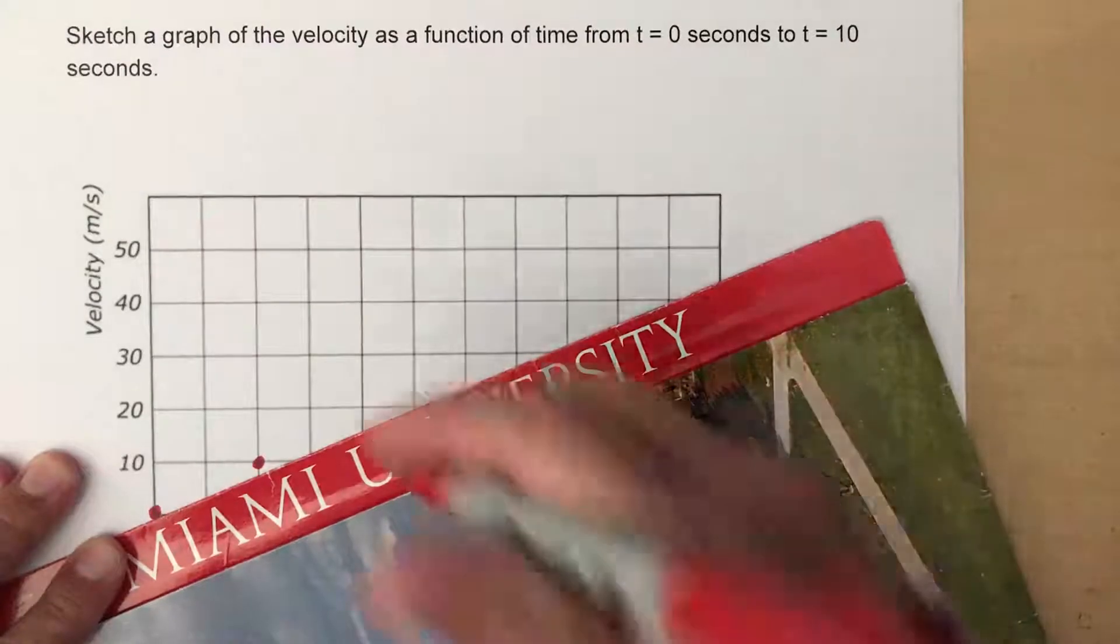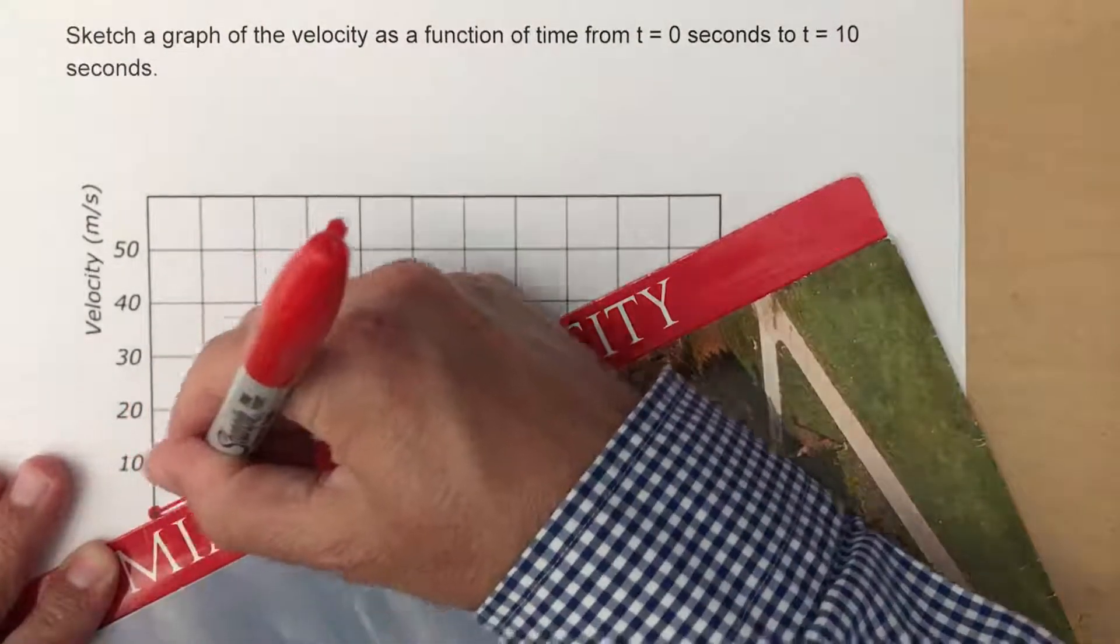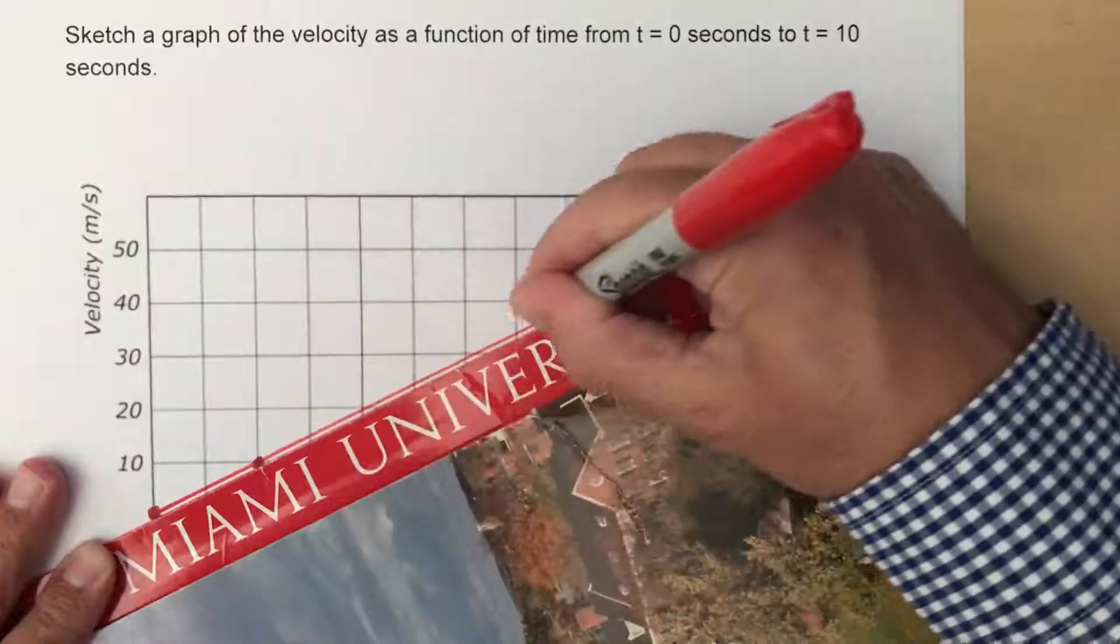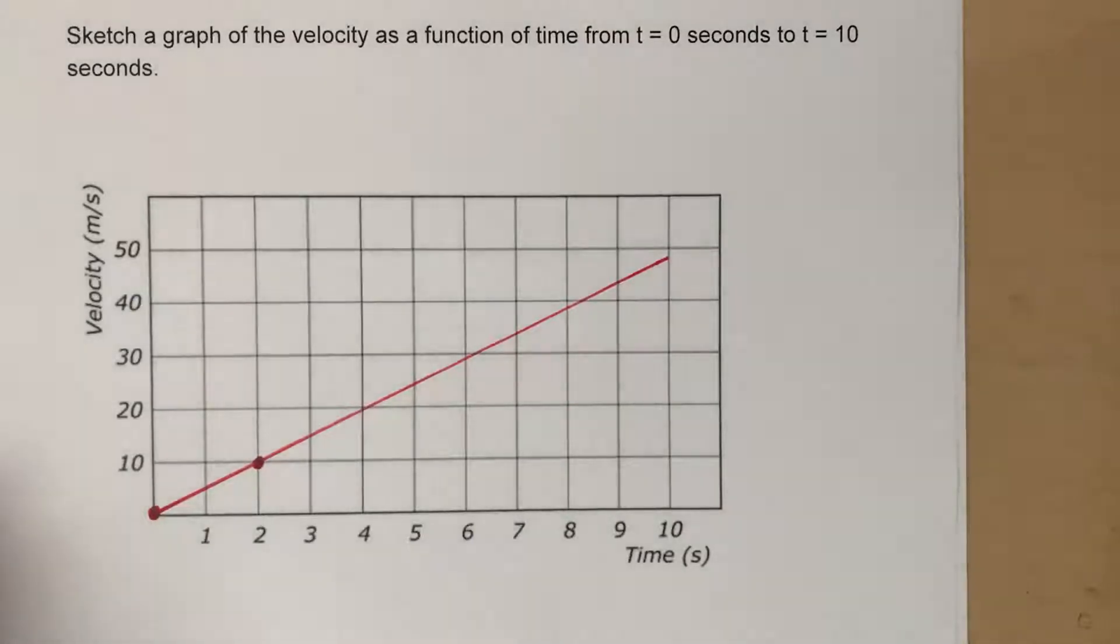All you need is two points to make a line here. So I'm going to line these up and then extend it out like that. Your line should look something like that for the velocity. I'm going to keep this one around because we're going to come back to this one a few times.